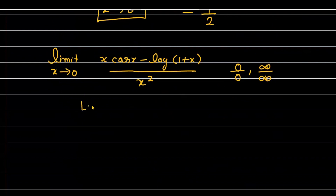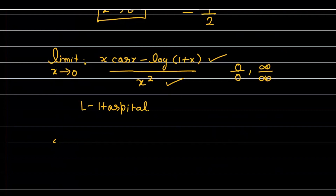So what is L'Hôpital's rule? If you have a function that is in 0/0 or infinity/infinity format and you need to find its limit at a given point, you differentiate the numerator separately and differentiate the denominator separately. Your goal is to reduce that indeterminate form. You keep doing this until the 0/0 form is gone. Importantly, however many times you differentiate the numerator, you must differentiate the denominator exactly the same number of times — and you don't differentiate the whole fraction together.